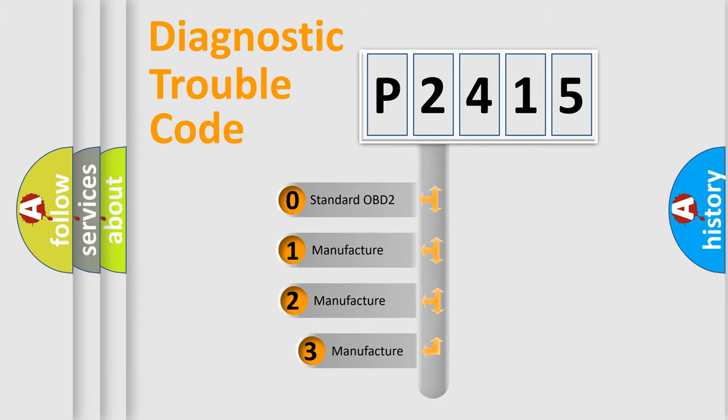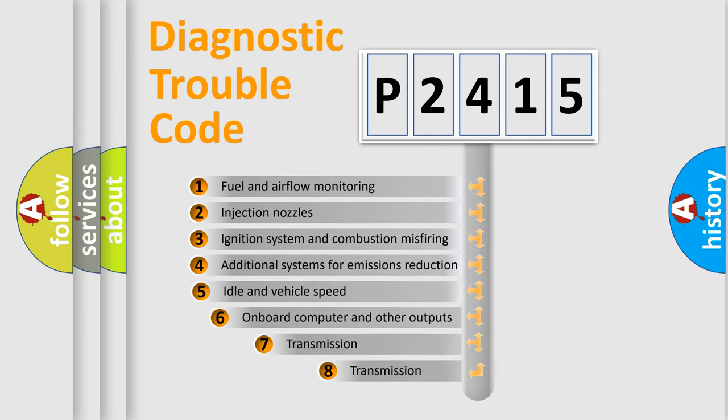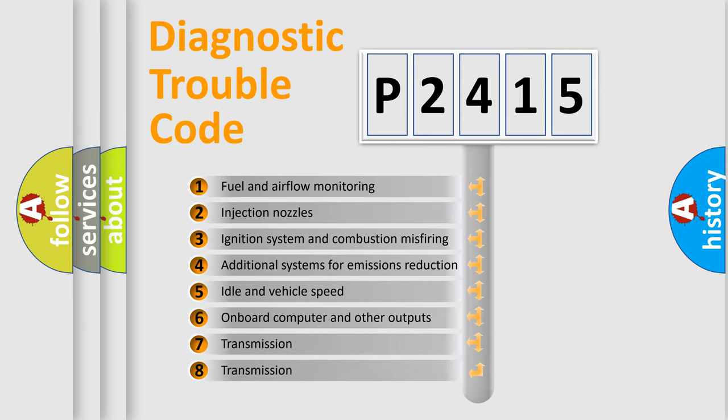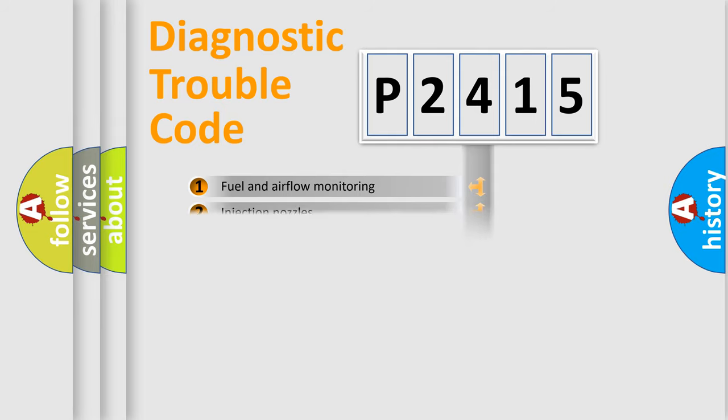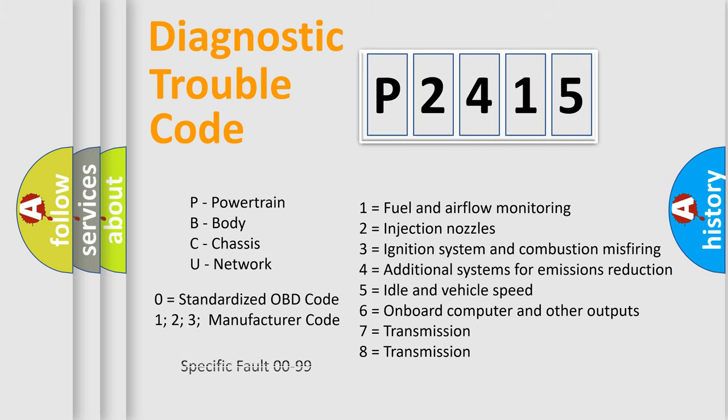If the second character is expressed as zero, it is a standardized error. In the case of numbers 1, 2, or 3, it is a more specific expression of car-specific error. The third character specifies a subset of errors. The distribution shown is valid only for the standardized DTC code. Only the last two characters define the specific fault of the group. Let's not forget that such a division is valid only if the second character code is expressed by the number zero.